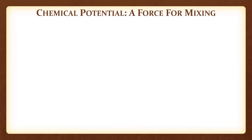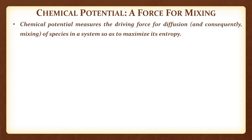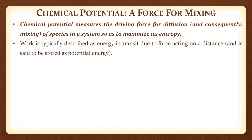Just as temperature is the driving force for thermal energy or heat exchange between systems so as to maximize entropy, and pressure is the driving force for expanding system volume to maximize entropy, chemical potential is a measure of the driving force for diffusion and consequently mixing of species in a system, thereby facilitating energy exchange between a system and surroundings or between subsystems so as to maximize entropy. This is a mode of work — work is energy transferred due to some force acting over a distance, and that work done on the system is stored as potential energy.